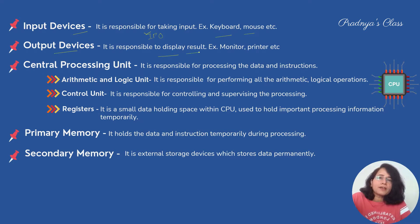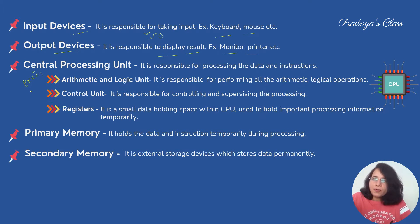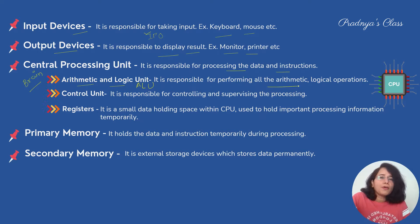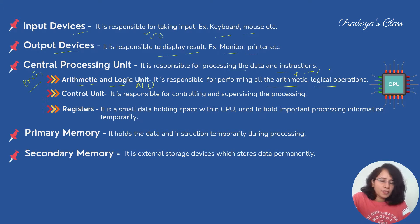The important component of the computer is the CPU — it is also called the brain of the computer. It is responsible for processing the data and instructions. It is further divided into three components. The first is the Arithmetic and Logic Unit, ALU. It performs all arithmetic and logical operations. Arithmetic operations include addition, subtraction, multiplication, and division; logical operations include less than, greater than, less than or equal to, and so on.